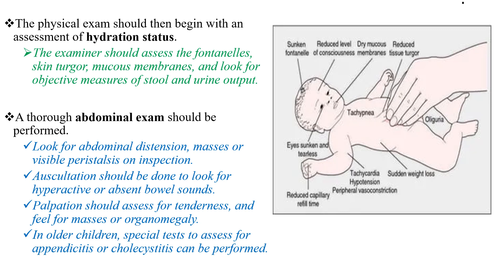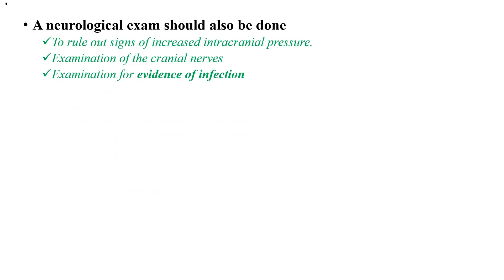A thorough abdominal exam should be performed. Look for abdominal distension, mass, or visible peristalsis on inspection. Auscultation should be done to look for hyperactive or absent bowel sounds. Palpation should assess for tenderness and feel for mass or organomegaly. In older children, special tests to assess for appendicitis or cholecystitis can be performed. A neurologic exam should also be done to rule out signs of increased intracranial pressure, examination of cranial nerves, and evidence of CNS infection.